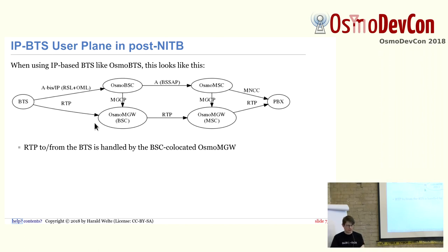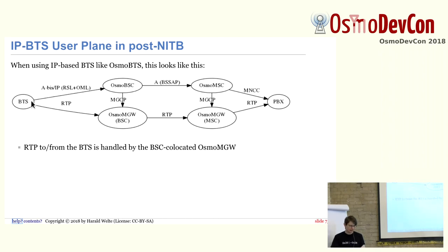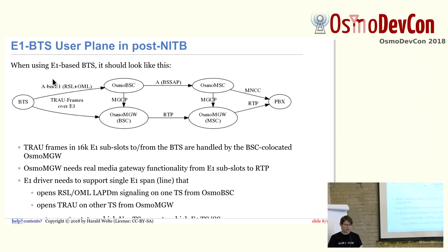This is all IP-based. So now the question is how can we attach something E1-like on the left-hand side to this new network? Today we still cannot, but we have a current feature ticket that we are working on to reintroduce this support. Basically, we have IP-based communication here and E1-based communication there. The signaling plane uses E1 with RSL and OML, and of course LAPDm inside, and that terminates in OsmoBSC for the signaling plane. Then we have some other E1 time slots that would be opened by OsmoMediaGateway, which can then have the sub-gen demultiplexer from 64k to 16 kilobit subslots and do the RTP conversion — like we did in NITB before, but this functionality would then be in the media gateway.